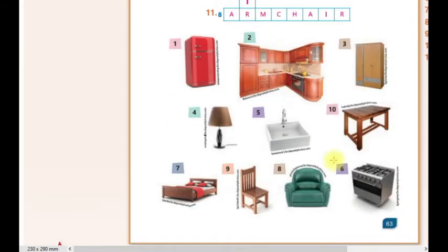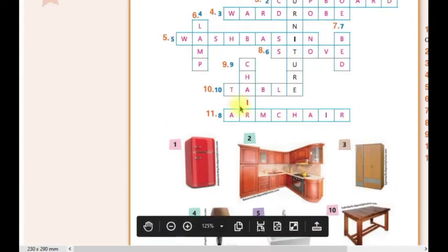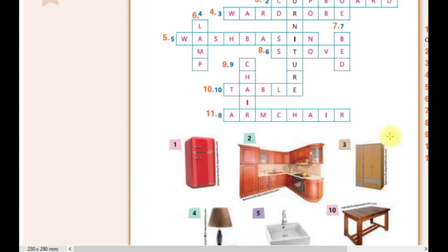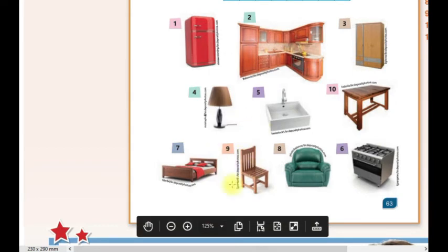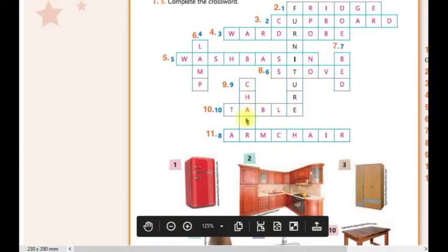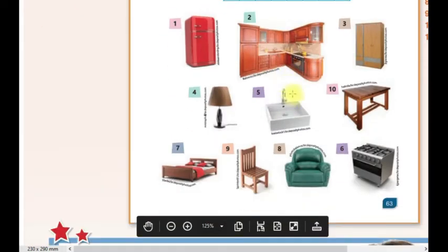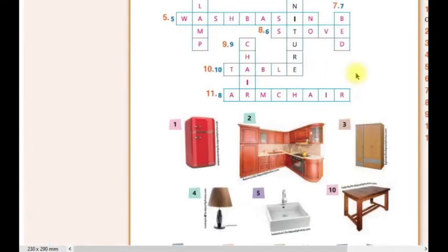Número 8 é a armchair, que é a poltrona. Número 9 é a chair, que é a cadeira. E o número 10 é a table, que é a mesa.